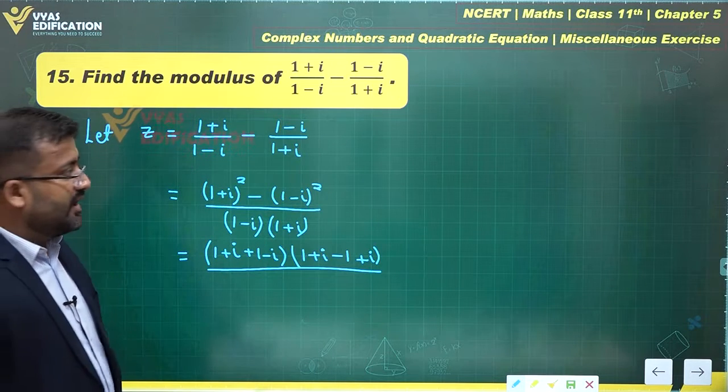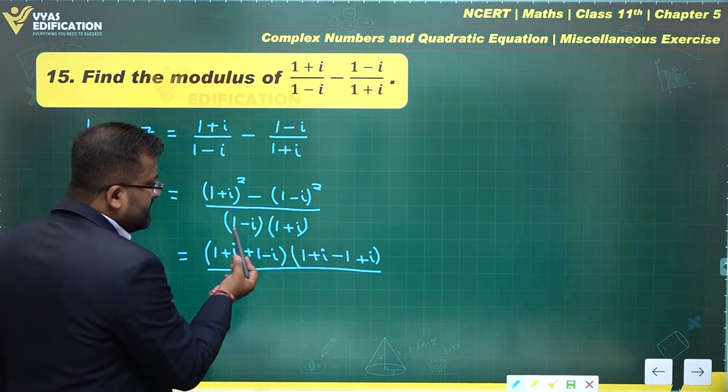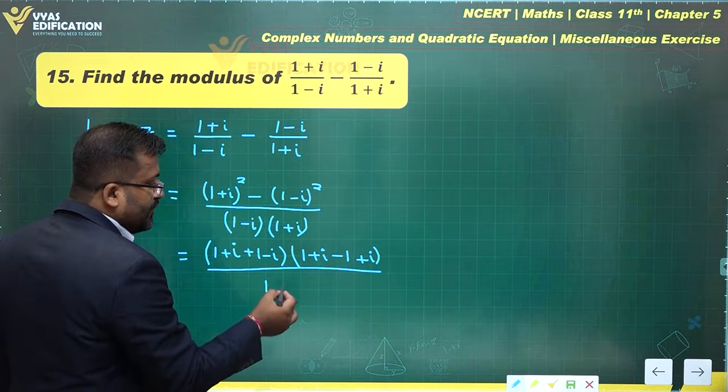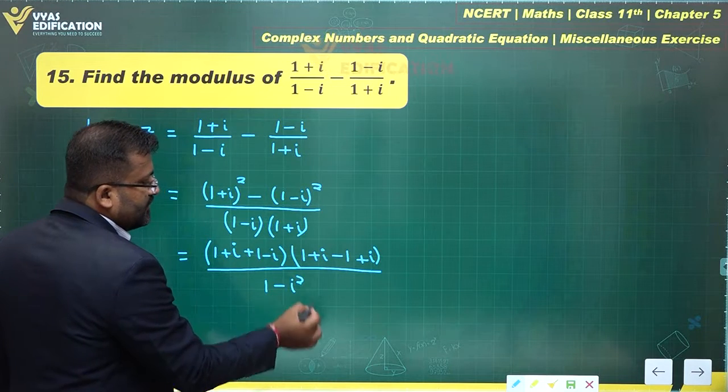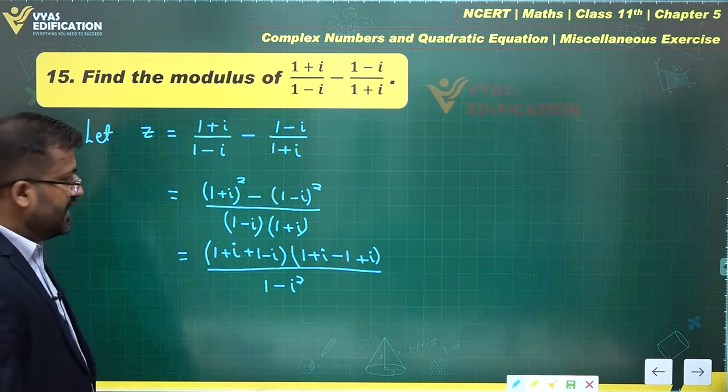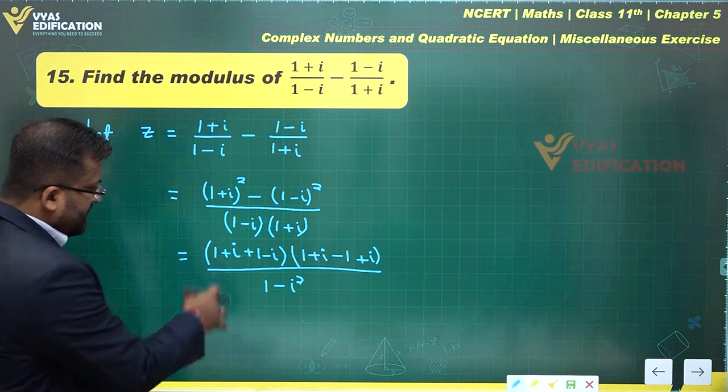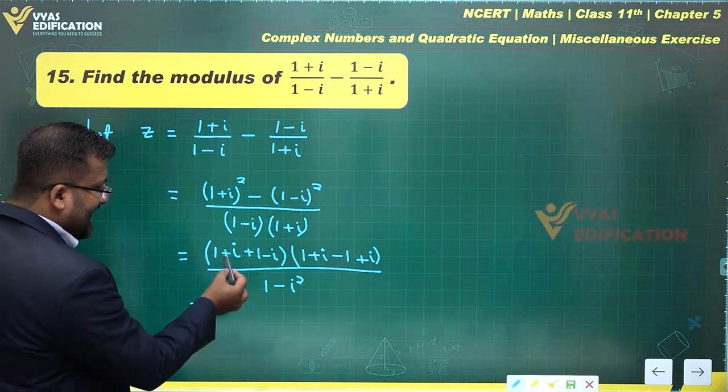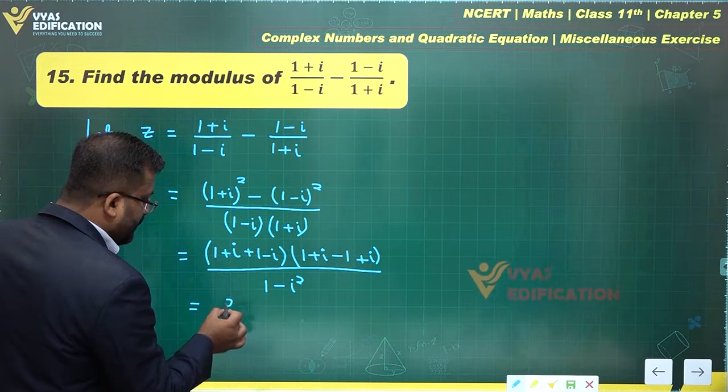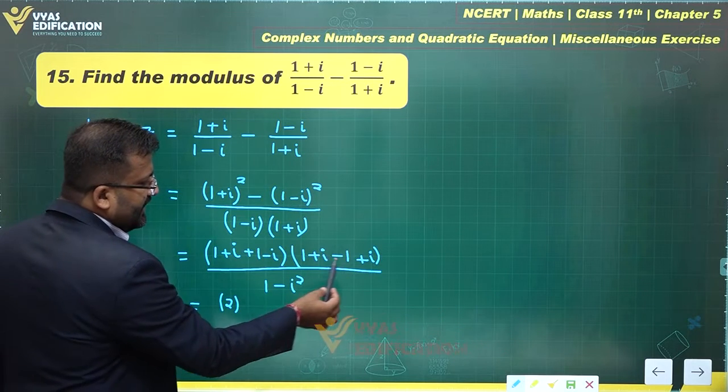What about the denominator? This is a²-b². What is the first term in the numerator? Can you observe that the i's get cancelled, this becomes 2.